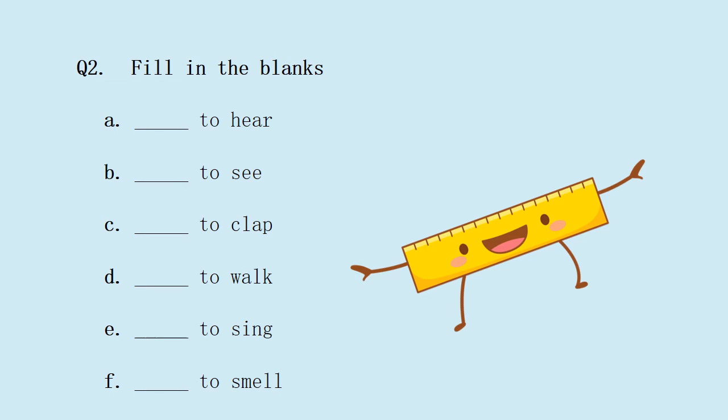Question 2. Fill in the blanks. Question A. Dash to hear. What we use to hear? Yes, we hear by our ears. So, the answer is ears to hear. Question B. Dash to see. What is the answer? Eyes to see. We see with our eyes. Eyes to see. E-Y-E-S. Eyes. C question. Dash to clap. What do we use to clap? Yes, we use our hands to clap. And how do we spell it? H-A-N-D-S. Hands. Hands to clap.